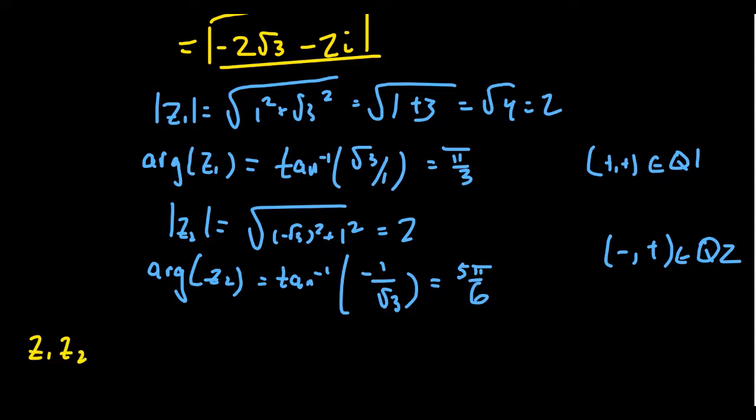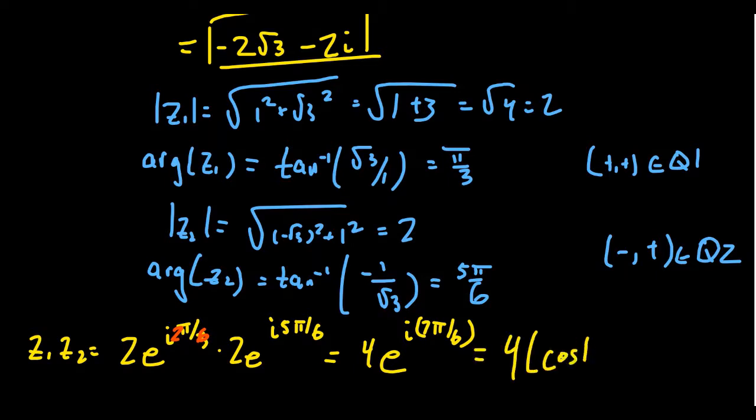So we get z1 times z2. This is equal to 2 e to the i pi thirds times 2 e to the i 5 pi sixths. And so then when we put these together, you're going to get 2 times 2, which is 4. Then we have to add together the arguments there. Since I need a common denominator of 6, I'm going to rewrite the first one as 2 pi sixths. So when I add those together, you're going to end up with 7 pi sixths as the angle. And so this gives us the trigonometric form, or if you wanted to get in the more expanded form, 4 times cosine of 7 pi sixths plus i sine of 7 pi sixths.